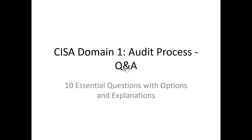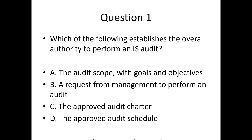Question 1. Which of the following establishes the overall authority to perform an IS audit? A. The audit scope with goals and objectives. B. A request from management to perform an audit. C. The approved audit charter. D. The approved audit schedule.